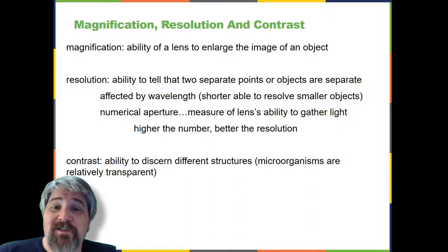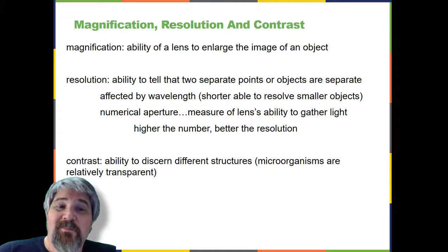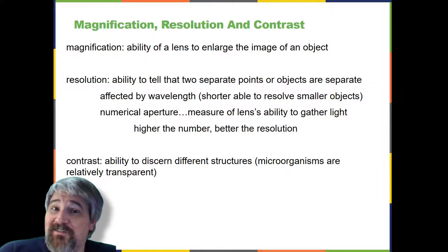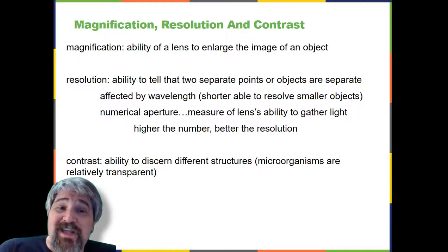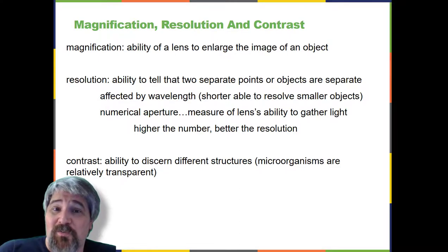Greater magnification typically improves our ability to see details of small objects, but magnification alone is not sufficient to make the most useful images. It is often useful to enhance the resolution of objects, the ability to tell that two separate points or objects are actually separate. A low-resolution image appears fuzzy, whereas a high-resolution image appears sharp. Two factors affect resolution. The first is wavelength. Shorter wavelengths will be able to resolve smaller objects. Thus, an electron microscope has a much higher resolution than a light microscope, since it uses an electron beam with a very short wavelength, as opposed to the long wavelength visible light used by a light microscope.